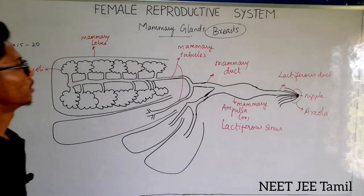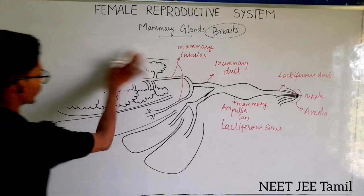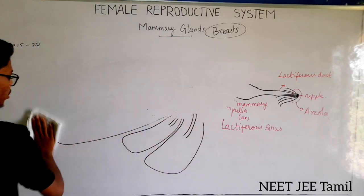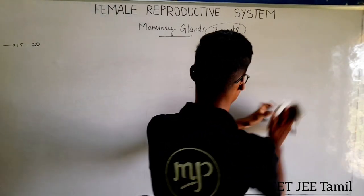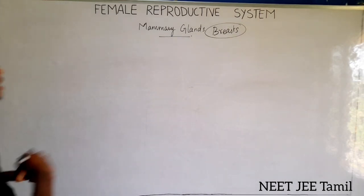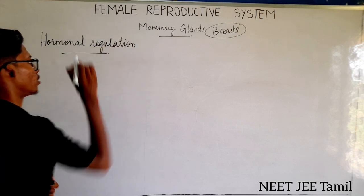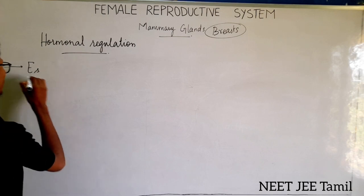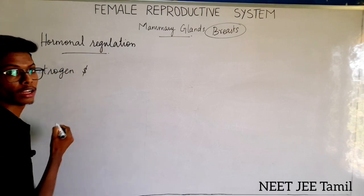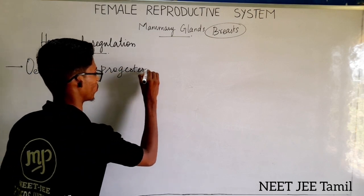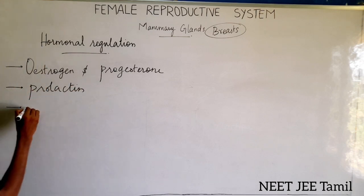Now we will look at the hormonal regulation of the mammary gland. The hormones involved are: estrogen, progesterone, prolactin, and oxytocin.